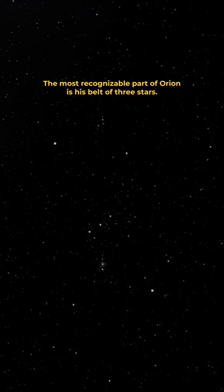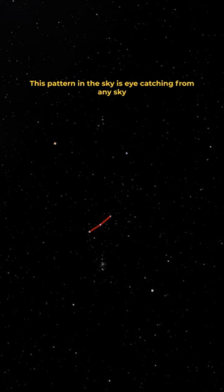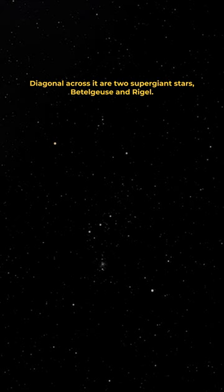The most recognizable part of Orion is his belt of three stars. This pattern in the sky is eye-catching from any sky, and a very valuable tool to navigate the winter stars. Diagonal across it are two supergiant stars, Betelgeuse and Rigel.